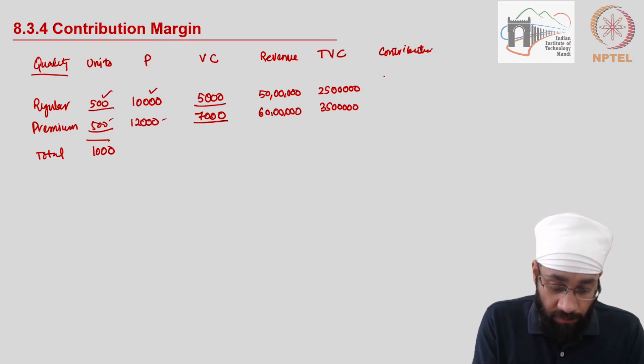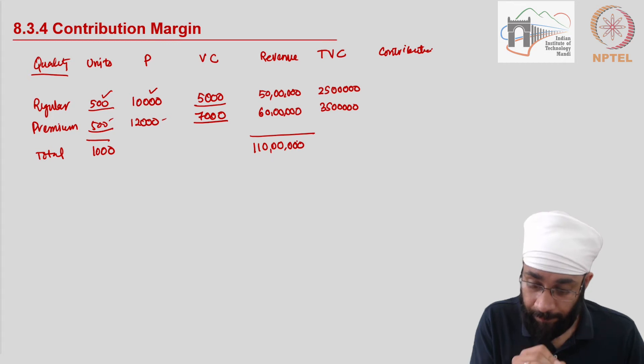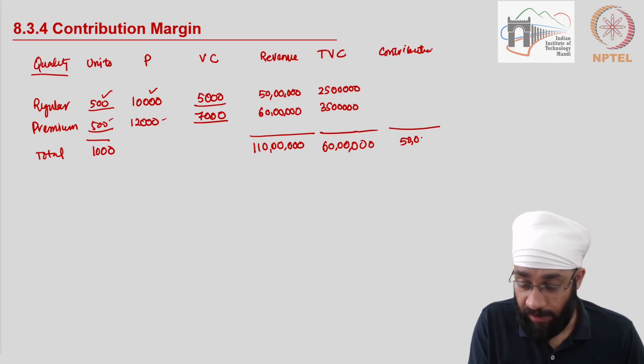The contribution of each of the units can be calculated. However, we will do the overall contribution calculation. So the total revenue that we are making here is 110 lakhs, and the total variable cost here comes out to be 60 lakhs.